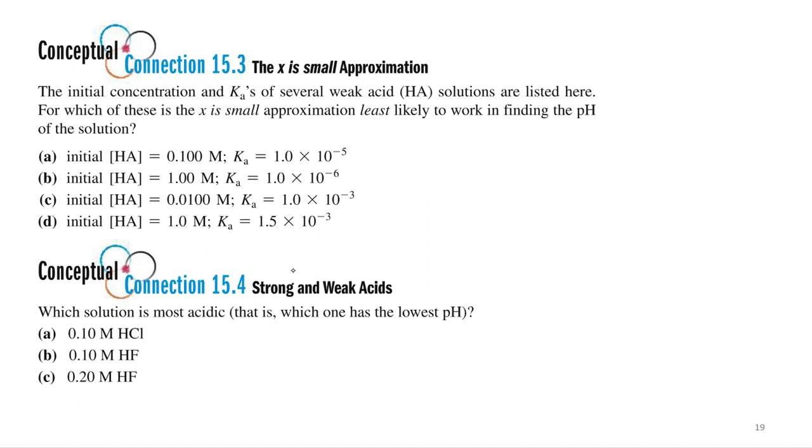10 times smaller? Nah, it's probably not going to work. I'll probably still do it and do the x, but I know it's not going to come back. Alright, so let's circle that so we know. Alright, so yeah, c is the least likely to work. Ka isn't much smaller than the initial concentration.